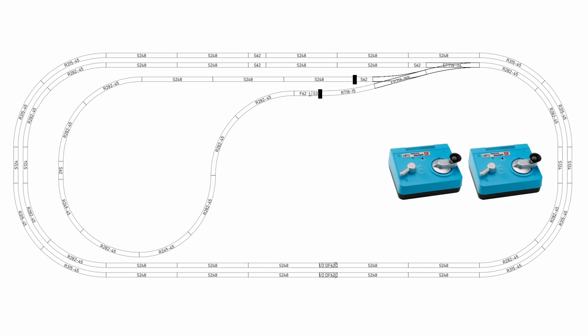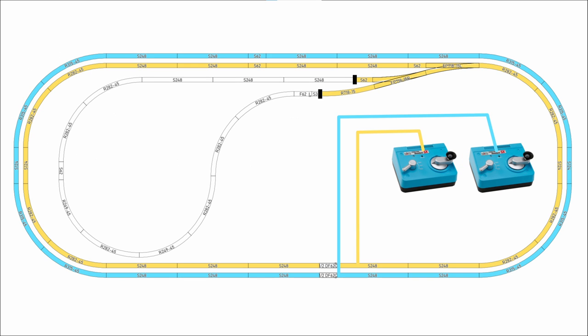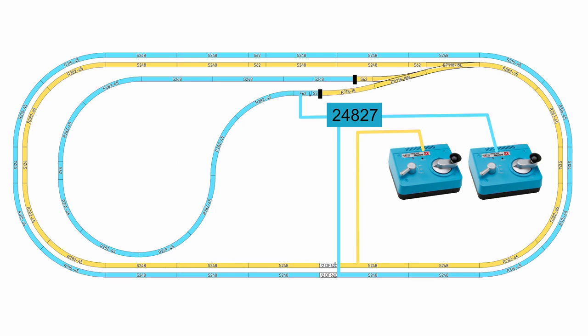The first thing you do is you put the insulators isolating that inside loop from the rest of the track. Then wire the two power supplies to their own track, one to the inside track, one to the outside track. Then use the 2487 extension cord to connect both the outside track and the loop to the outside track's power supply.